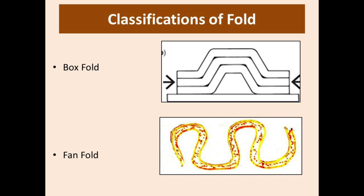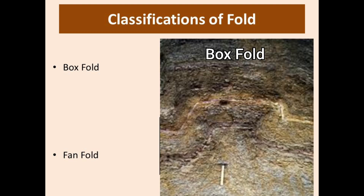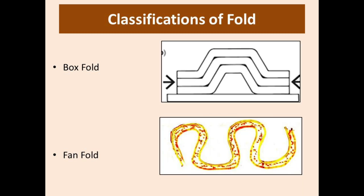The next type is box fold, in which the crest is broad and flat and two hinges are present on each side of the flat crest. Then the fan fold, in which both limbs are overturned and the crest and trough are sufficiently rounded. Fan fold is divided into anticlinal fan fold and synclinal fan fold.